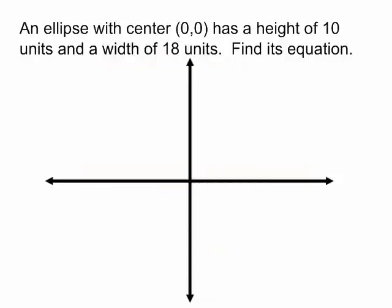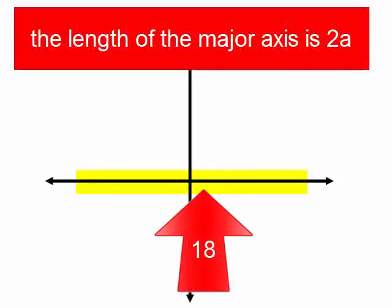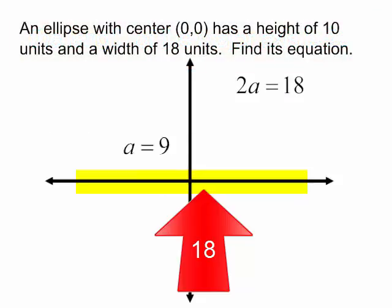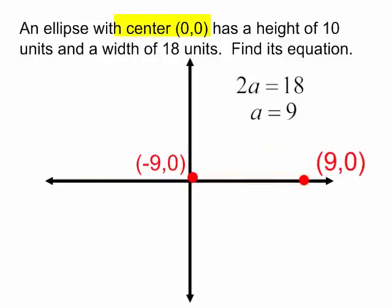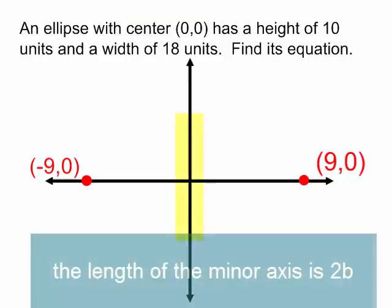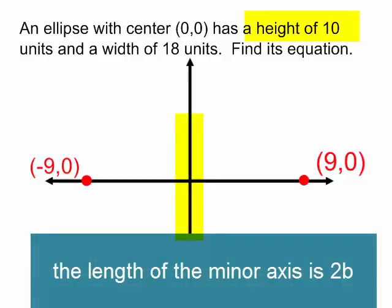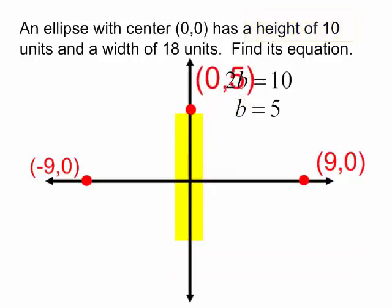Well the larger axis is 18, so that will be my major axis, which is equal to 2 times a. So 2a will equal 18, which means a equals 9. From the center of my ellipse, I will go to the right 9 and to the left 9. The minor axis has a height of 10 and the minor axis is 2 times b. So 2b will equal 10, b will equal 5. I will go up 5 and down 5.